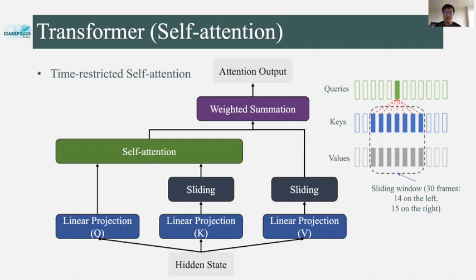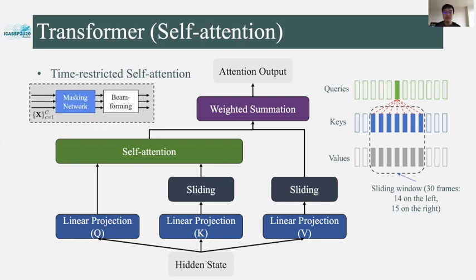However, the memory cost of the self-attention layer is at least the square of the input length. It is acceptable in the speech recognition part because the input is already subsampled. But in the frontend, subsampling is not a good option for signal-level processing tasks since we need to keep the original time resolution. Here we adjusted the self-attention to be performed on local segments of the speech, because those frames typically have the highest correlations. For each query, the time-restricted self-attention only computes attention weights on the local context of keys and values, using a sliding window of 30 frames. We applied this time-restricted self-attention in the masking network of the frontend.